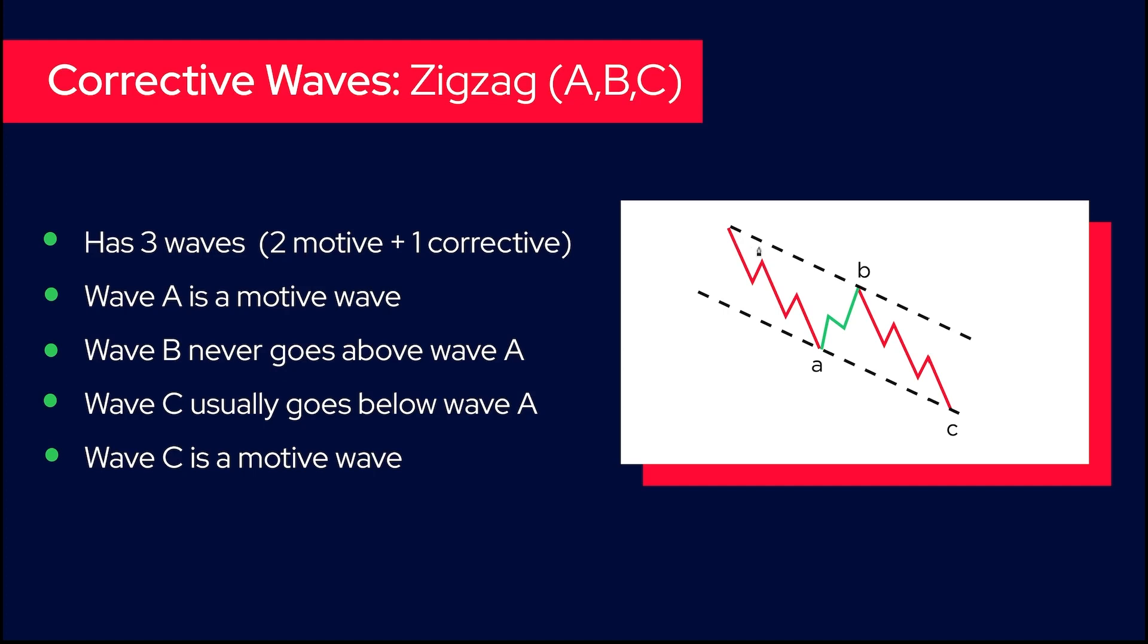This is a corrective pattern that in my example is going down. Every wave in this pattern that is going down is motive, so A and C are motive waves and B is a corrective wave because it's correcting. Wave A is a motive wave, so as you now know it needs to have five waves - 1, 2, 3, 4, 5.